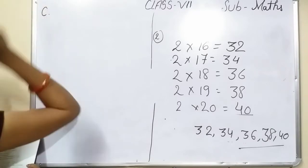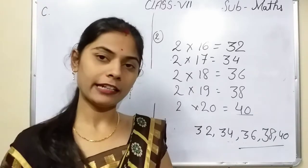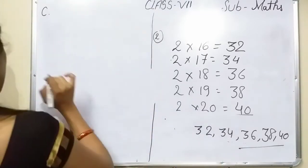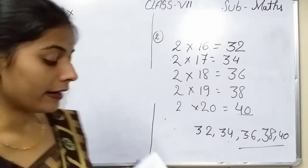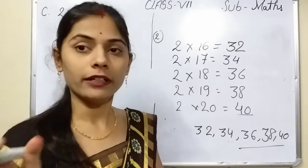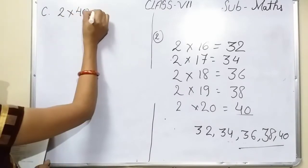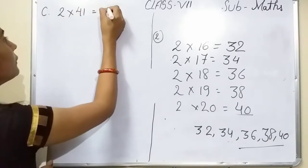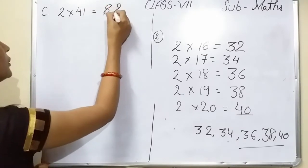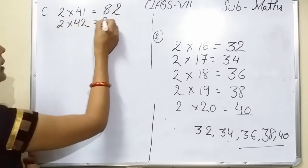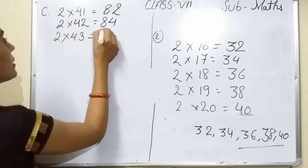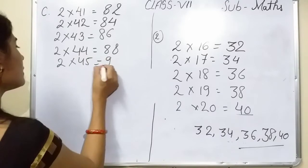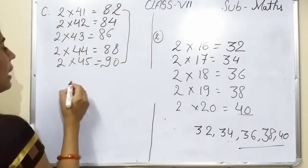Question number 3: what are the multiples of 2 between 81 and 91? The same method applies — just multiply and find the answer. 2×40=80 is less than 81, so it will not be there. Try 2×41=82. Then: 2×42=84, 2×43=86, 2×44=88, 2×45=90. So your answer is 82, 84, 86, 88, and 90.